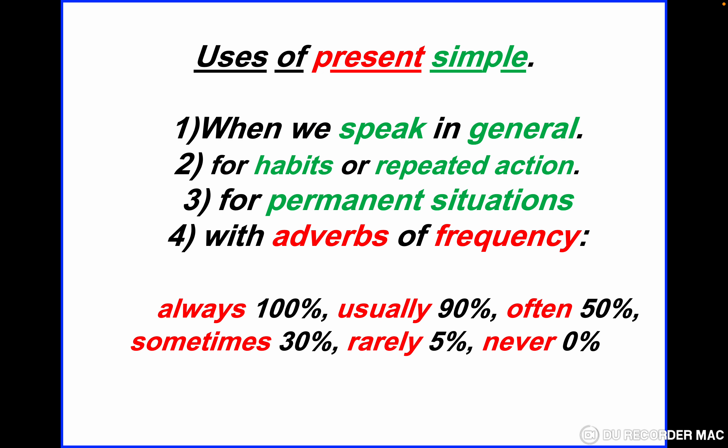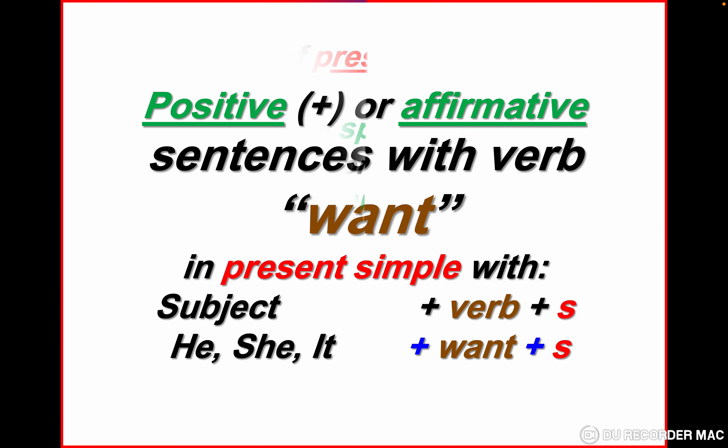Uses of present simple — we'll repeat this every three lessons. We use the present simple when we speak in general. We use it for habits or repeated actions, for permanent situations, and also with adverbs of frequency like always, usually, often, sometimes, rarely, and never.